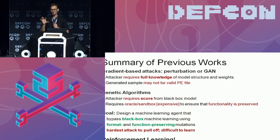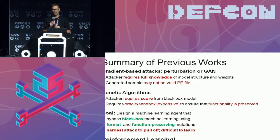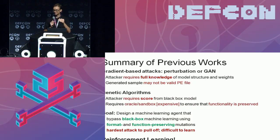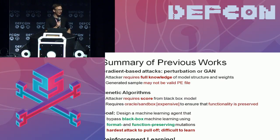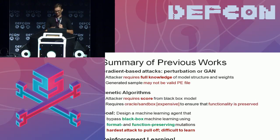So I'm setting the stage — I hope you realize I'm painting a picture of why it's hard to attack machine learning with PE malware. We want to avoid requiring full knowledge about a deep learning model. We don't want to care what kind of model we're attacking or even that it is a machine learning model. We want to ensure that whatever malware we produce maintains file format and functionality. And we want to avoid the expense of running things through a sandbox. Our goal is to design an artificially intelligent agent that will learn to play a game against your machine learning model, choosing mutations known to preserve file format and function — and for this, we're turning to reinforcement learning.